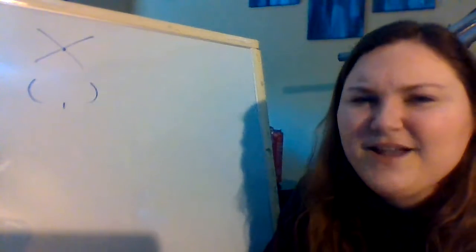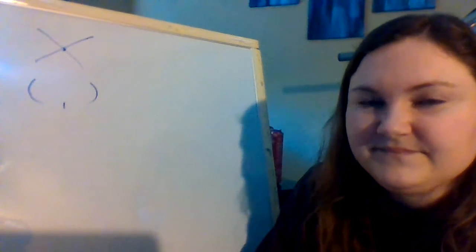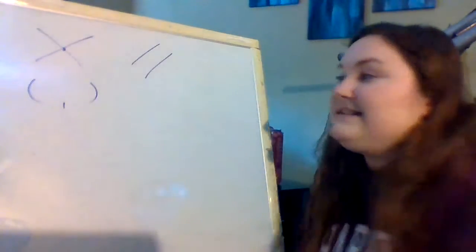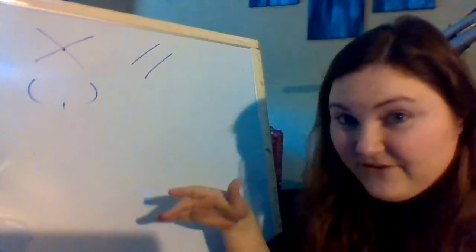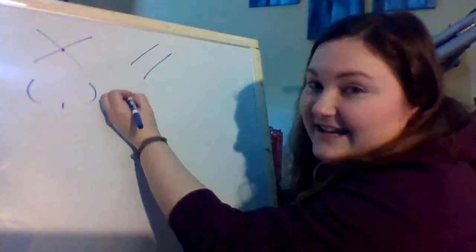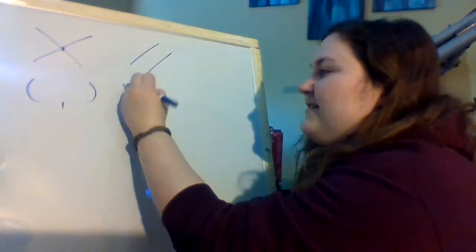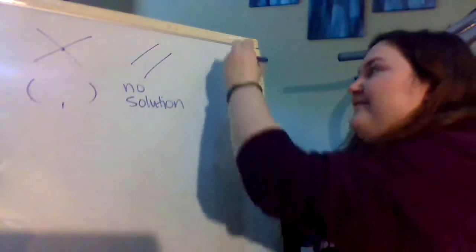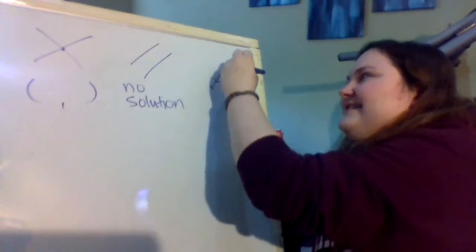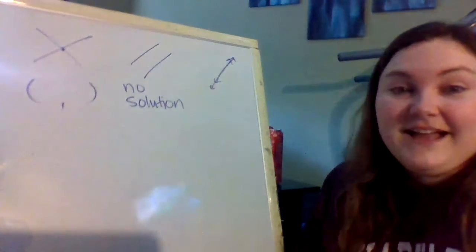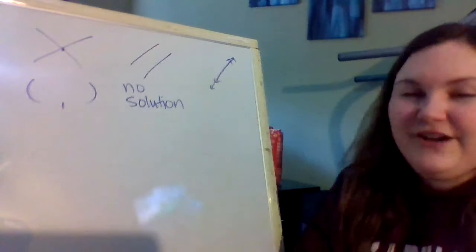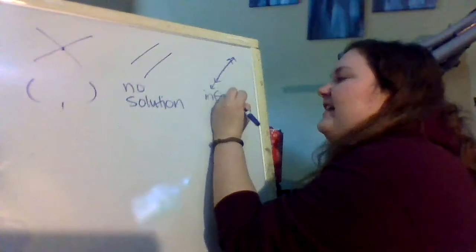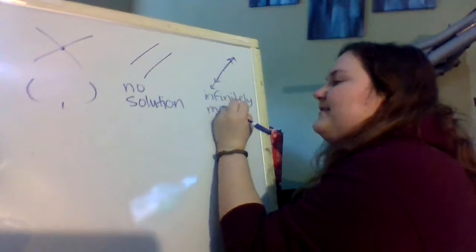Remember we had said under types of solutions in the solve by graphing notes, lots of times those two lines are going to intersect at a single point and your answer is going to be that single solution point. But that's not always the case. Think about what were some of the other things we saw. Well one option we saw was we saw you could have two lines that are parallel and those parallel lines never intersect at a point. So we would say the answer is no solution. We also saw that you could have two lines that are in the same exact spot that intersect at a lot of different points. And so we said for this your answer is infinitely many solutions.